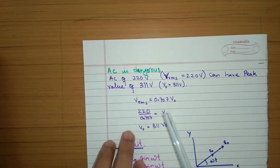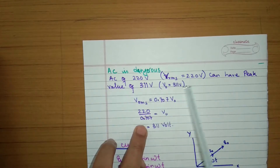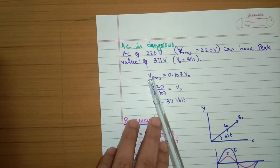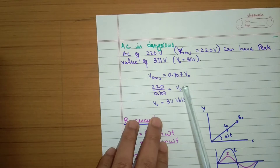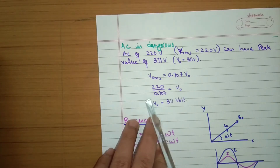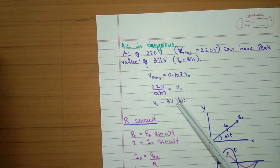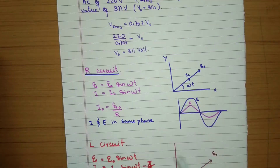AC voltage is more dangerous than DC voltage. When we say AC of 220 volt, the RMS value is 220 V, but it can have a peak value of 311 V — because V₀ = 220 / 0.707 = 311 V. In DC of 220 V, the voltage is 220 V at all times.